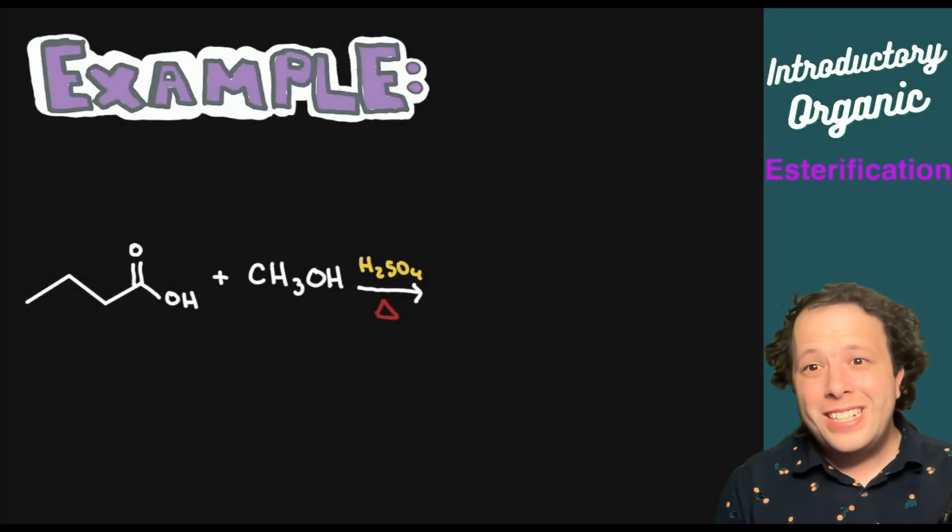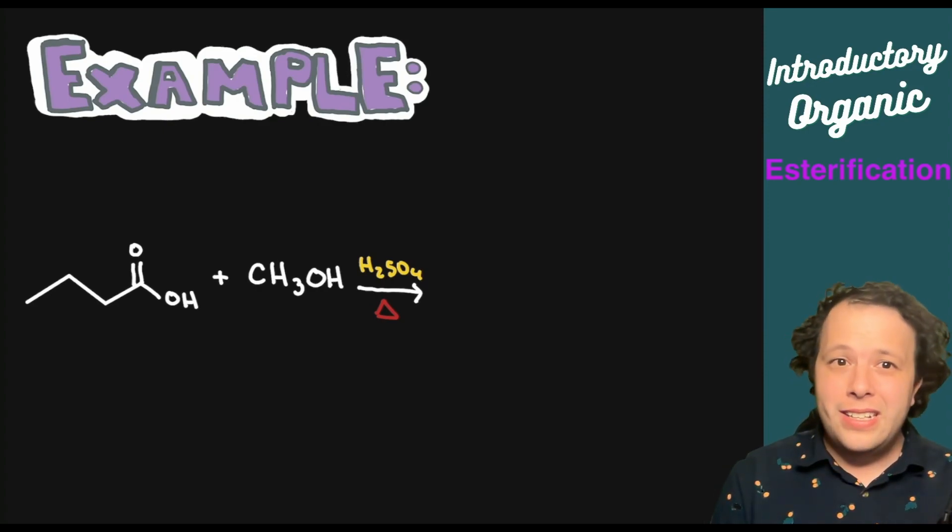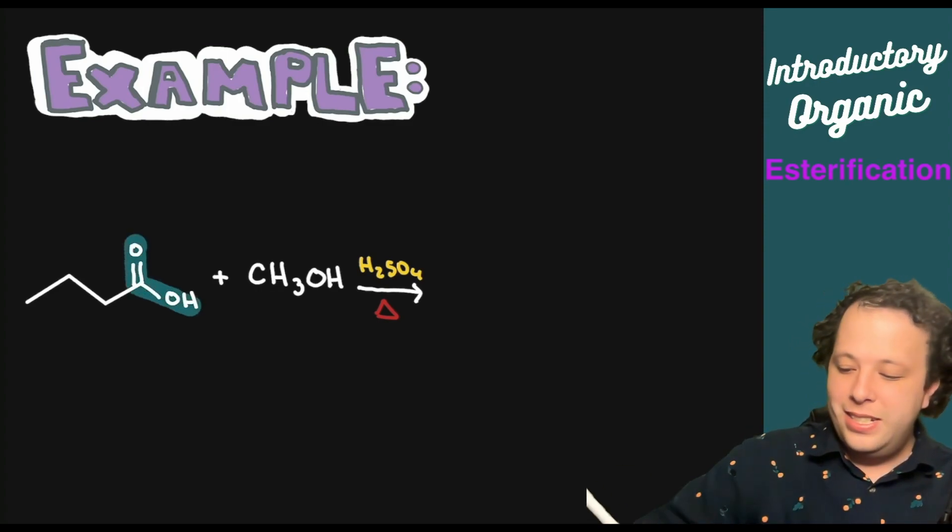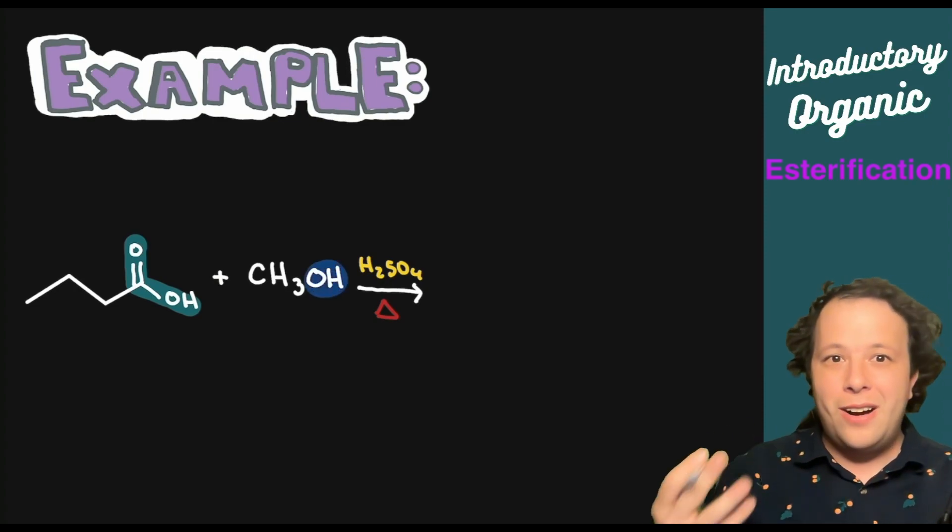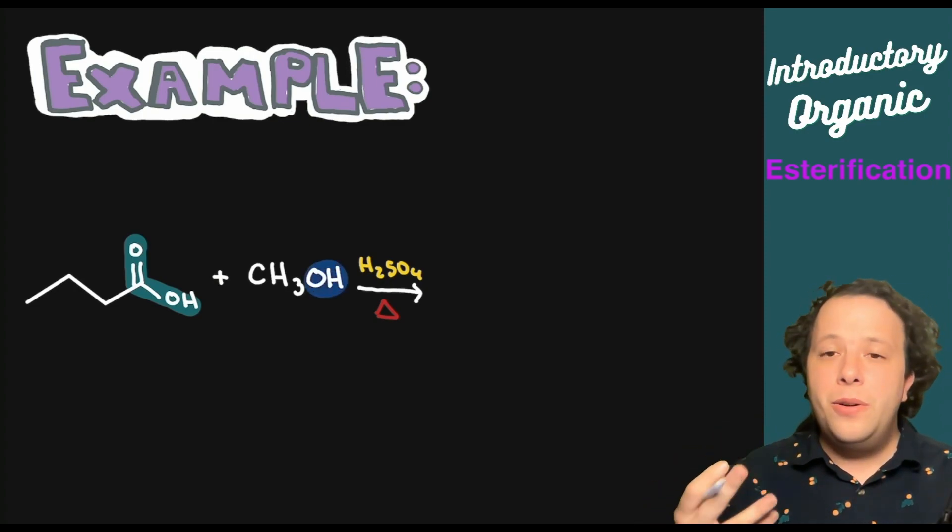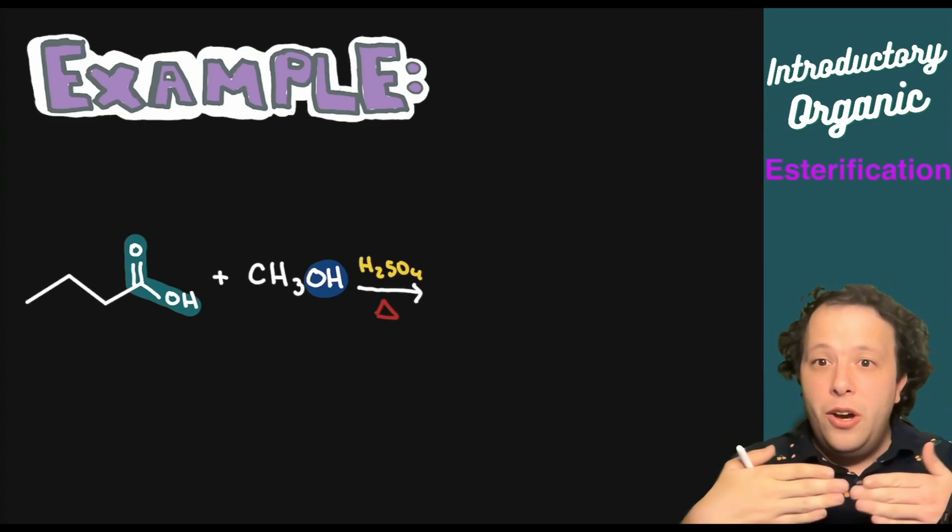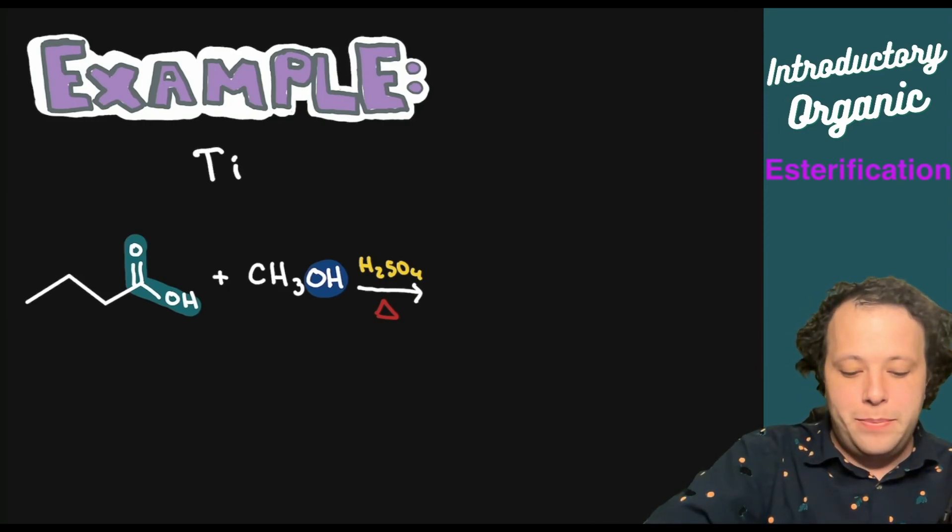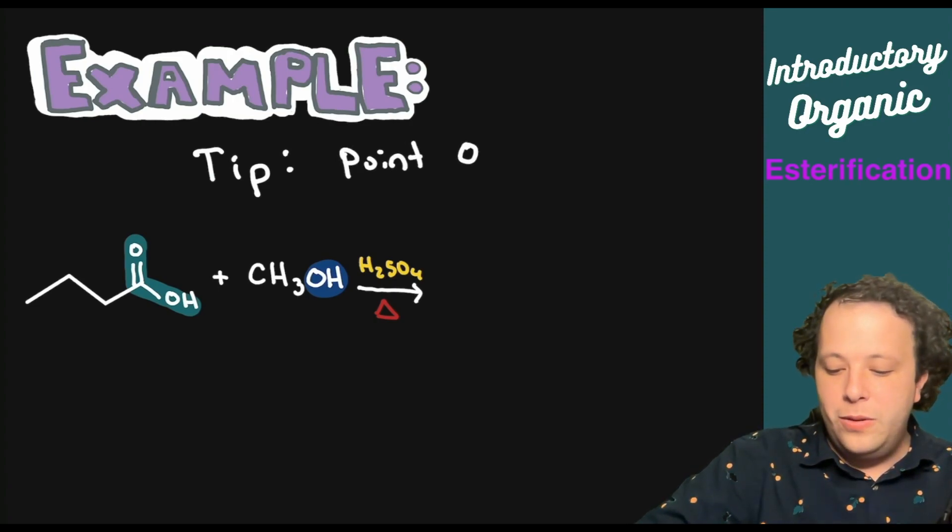All right. So our first example of doing an esterification. Most likely what you're going to get is a carboxylic acid and an alcohol component. So if we look really closely, we can see the carboxylic acid on the left, and then we have our alcohol on the right. Now, the whole idea about this is setting it up so that way you can easily see how the OH components are going to be pointing at each other. So my first tip is to point the OHs toward one another.